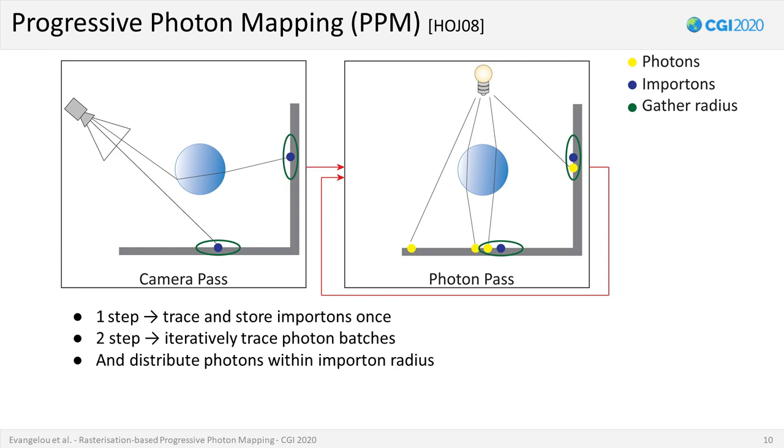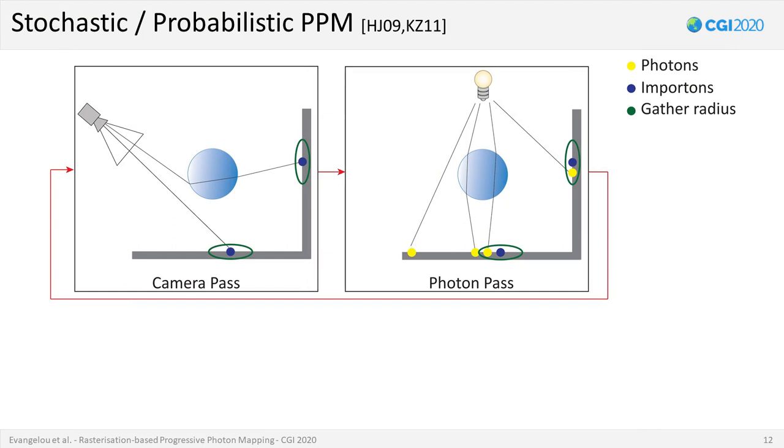Then, photons are iteratively emitted in batches and traced, contributing to the stored importons in every iteration. This iterative photon emission process allows for arbitrary large populations of photons. Coupled with the statistical screening of the photon gathering radius, the proposed mechanism ensures high quality and consistent output with a low memory footprint. Progressive photon mapping was further improved independently by Hatshizuka and Jensen as well as Naus and Zeeker, who unified both the camera and light stages.